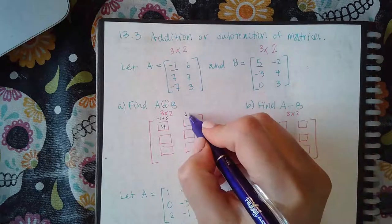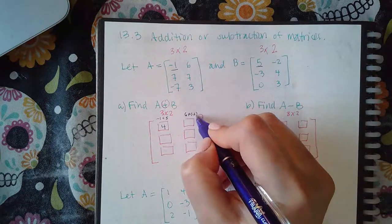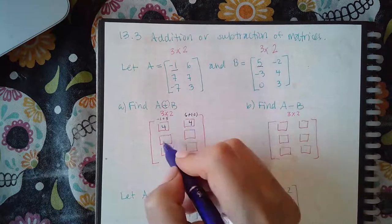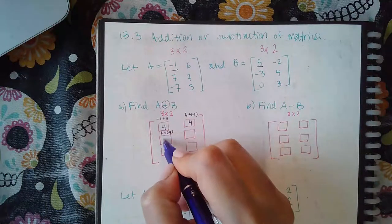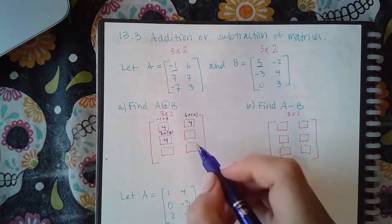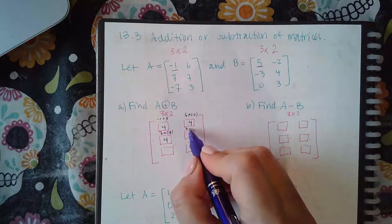Here, this is going to be six plus a negative two, which is four. Here, this is going to be seven plus a negative three, which is a positive four. This is going to be seven plus four, which is 11.